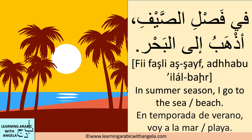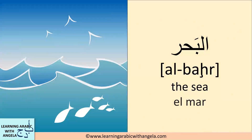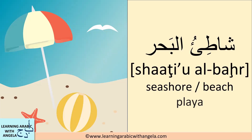An example sentence: Fi fasli saif adhaabu ila al-bahr — in summer season, I go to the sea or the beach. Sometimes the meaning alternates, so bahr could mean sea or beach. Al-bahr means the sea. To be more specific, shati' al-bahr is actually the beach or the seashore. For short, you can simply say al-shati'.